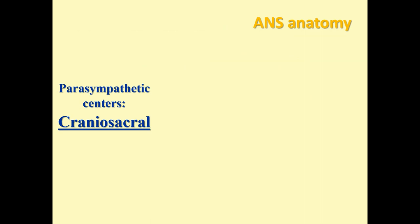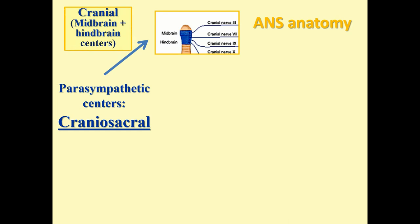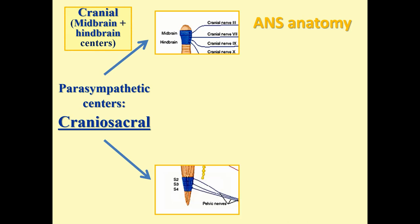The parasympathetic centers are called craniosacral. Part of the centers are cranial — including midbrain and hindbrain centers — and part are sacral, limited to three segments of the sacral spinal cord: S2, S3, and S4.